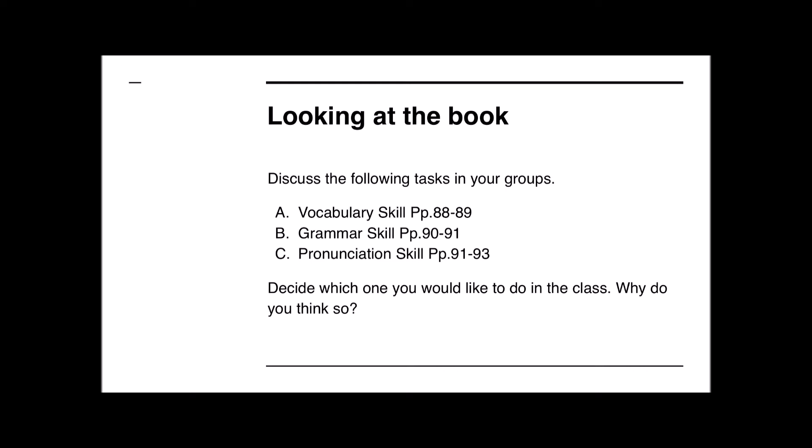For part B, write each word from activity A next to the correct definition. Take those words from part A and match them. For example, 'eye-catching' would probably match number one: 'to make something especially noticeable or attractive so people will buy it.' Then if we go to page 90, there's grammar.